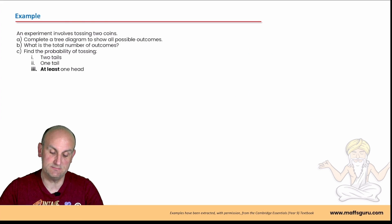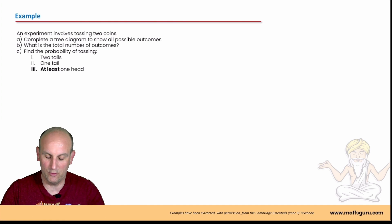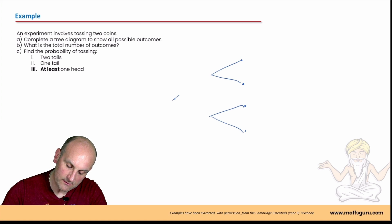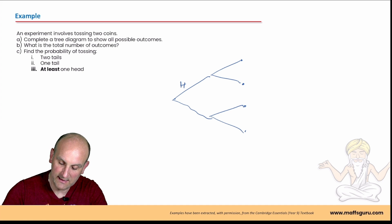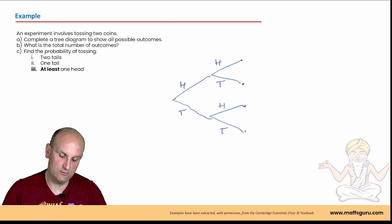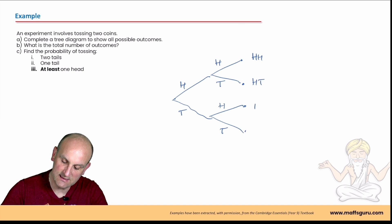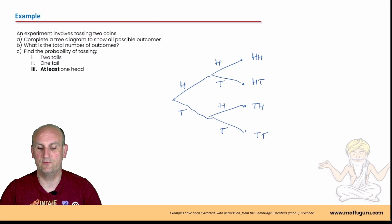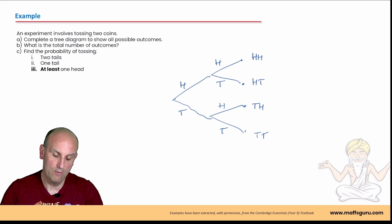Let's look at some examples. Example one: an experiment involves tossing two coins. Complete a tree diagram to show all possible outcomes. I've already drawn this — the outcomes at the ends of the branches are head-head, head-tail, tail-head, and tail-tail. So the total number of outcomes is four.